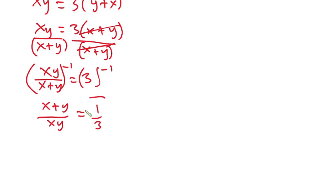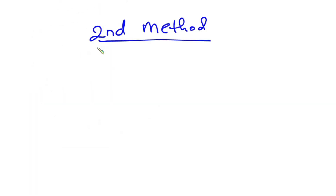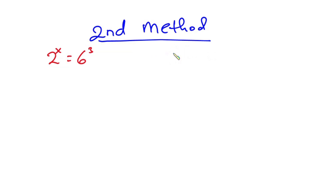So this is our answer: 1 over 3. Now let's go to the second method. In the second method, we again use 2 to the power x equals 6 to the power 3, and 3 to the power y equals 6 to the power 3.